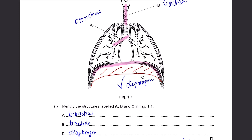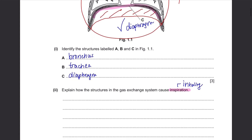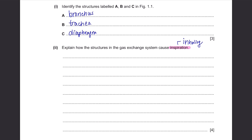the external intercostal muscles will contract as well. As a result, the ribs will move upwards and outwards and the overall volume of your lungs will increase. Then the pressure inside your lungs will decrease, and air will be able to enter to fill up the extra volume and equalize the pressure. This is one of the most basic things you need to know from this lung chapter.